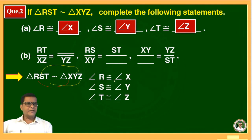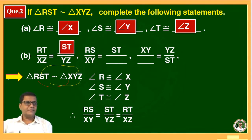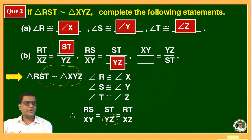Now, the sides are in proportion. Therefore, RS upon XY is equal to ST upon YZ is equal to RT upon XZ. So the answer for RT upon XZ is ST. For RS upon XY, the answer is ST upon YZ. For the last blank, XY upon dash equals YZ upon ST — taking the reciprocal, the answer is RS.